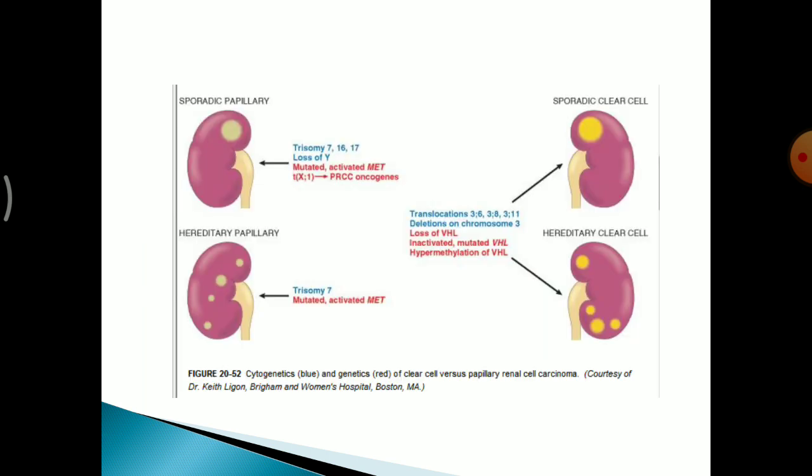To summarise the cytogenetic abnormalities: trisomy 7, 16, 17 and loss of Y are seen in sporadic papillary carcinoma, while trisomy 7 is seen in the familial form. The VHL gene-associated tumours show hypermethylation and inactivated or mutated VHL gene.